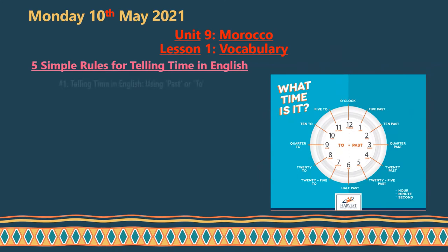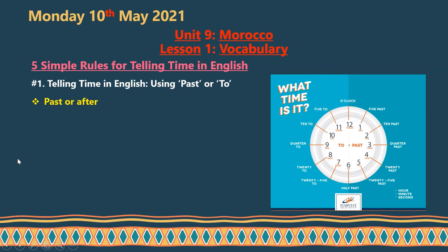The first rule for telling the time in English is using 'past' or 'after.' We use 'past' or 'after' for minutes 1 to 29. It means you can use 'past' or 'after' from one minute until 29 minutes after the hour.